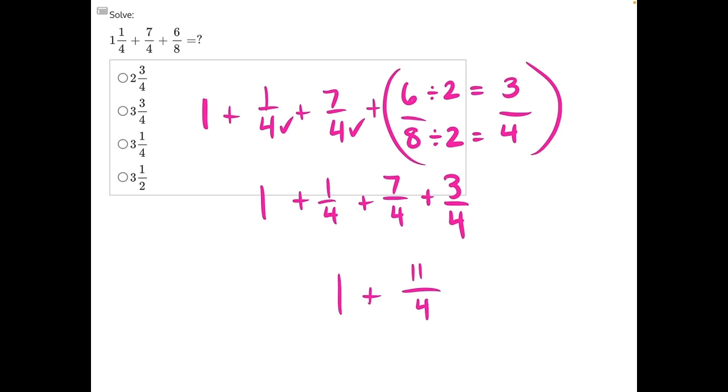And to simplify this improper fraction down, four can go into 11 two times evenly with what remainder? Well, two times four is eight, and 11 minus eight would leave us with three. So we have two and three fourths as the mixed fraction version of this improper fraction.